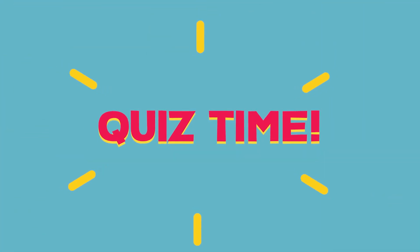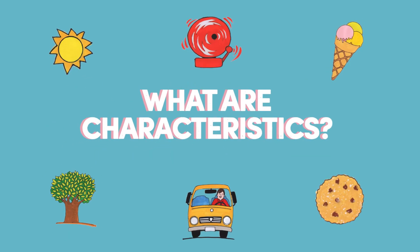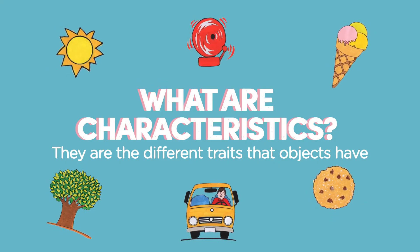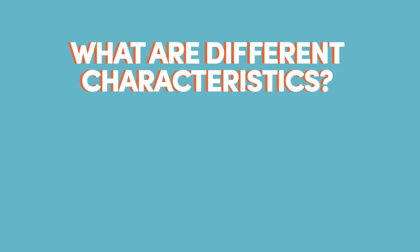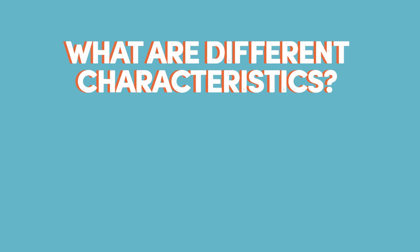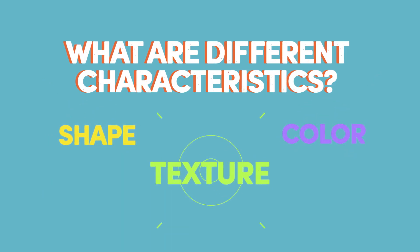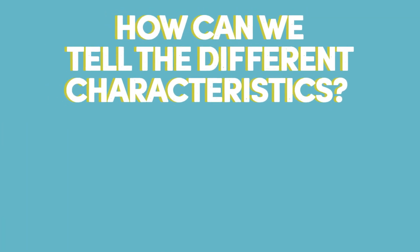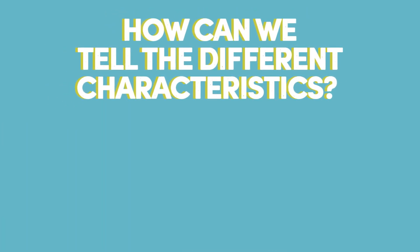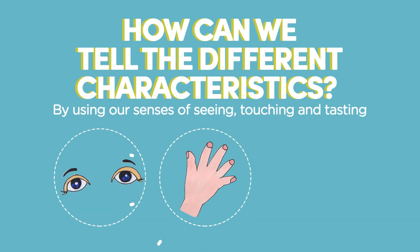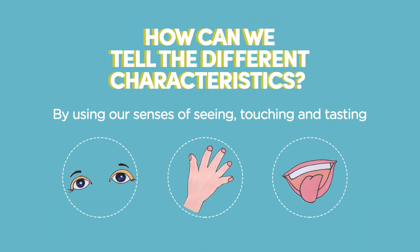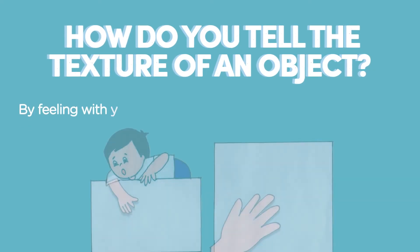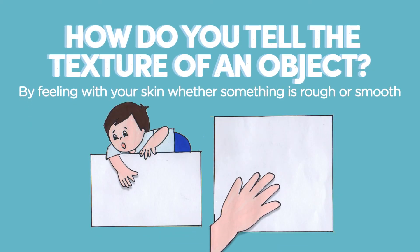It's quiz time! What are characteristics? They're the different traits that objects have. What are the different characteristics? They're shape, color, texture, taste, and size. How can we tell the different characteristics? By using your senses of seeing, touching, and tasting. How do you tell the texture of an object? By feeling with your skin whether something is rough or smooth.